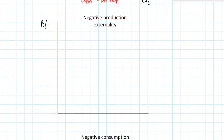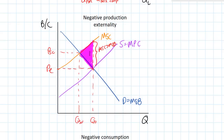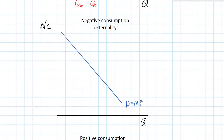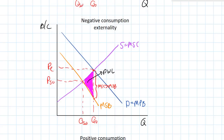Our last topic is market failure, starting with negative production externalities. This is a market in which the cost to society of producing a good — the marginal social cost — is greater than the cost to the private firms that produce it, which is the marginal private cost. The socially optimal quantity QSO is less than the equilibrium quantity QE, and there's a deadweight loss because the marginal social cost is greater than the marginal social benefit. A negative consumption externality exists when consumption of a good benefits the individual consumer more than society, so the marginal social benefit is less than the marginal private benefit, and equilibrium quantity is again greater than the socially optimal quantity.